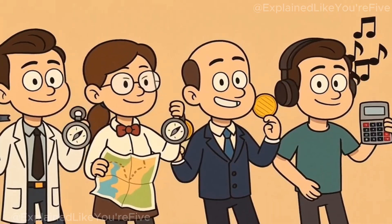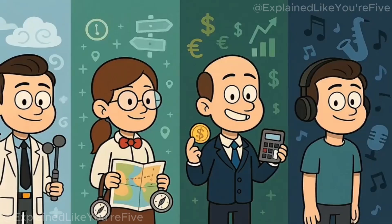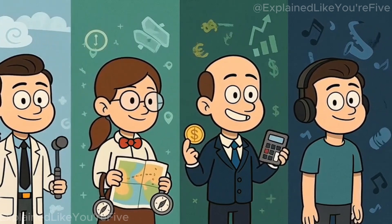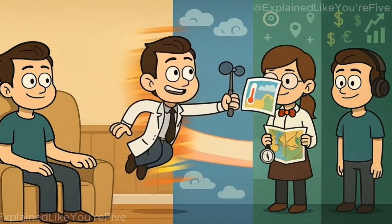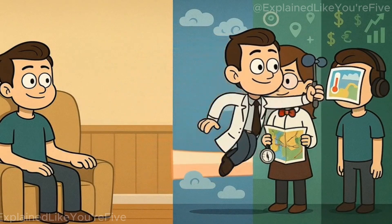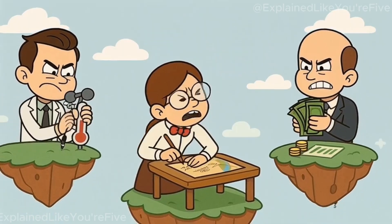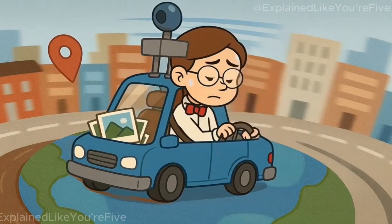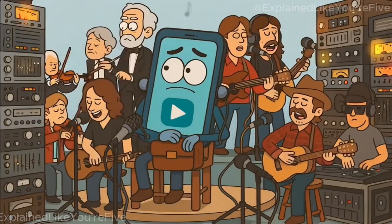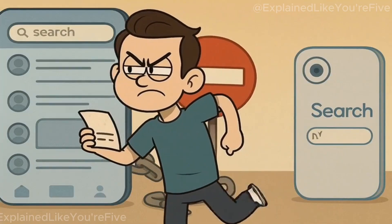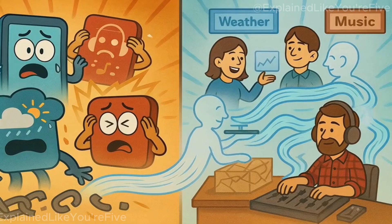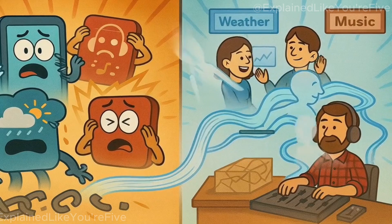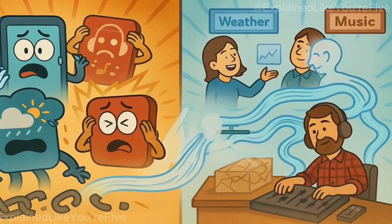It's like having a team of really smart, really fast assistants who are experts in different things. One assistant is a weather expert, another is a map expert, another is a money expert, and another is a music expert. Whenever you need something, the right assistant jumps into action and gives you exactly what you need instantly. Without APIs, every app would have to be built from scratch and couldn't talk to other apps or services. Your weather app would need its own weather stations, your map would need to drive around the world taking pictures of every street, your music app would need to record every song ever made, and your social media app couldn't even let you sign in with Google. It would be chaos. Instead, APIs let different companies and services specialize in what they do best, and then share their expertise with everyone else through those invisible waiter systems.